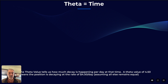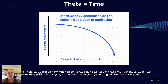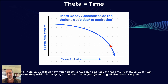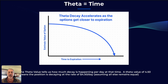The Theta value tells us how much decay is happening per day. A Theta value of $4.50 means the position is decaying at the rate of $4.50 a day, assuming all else is equal. And this is what that decay curve looks like — the closer you get to expiration, the faster it decays. It may be $4.50 per day here, then $6 the next day, then $9 the day after. The closer we get to expiration, the faster it decays, because there is less time for things to impact the price of the stock and therefore its corresponding options.